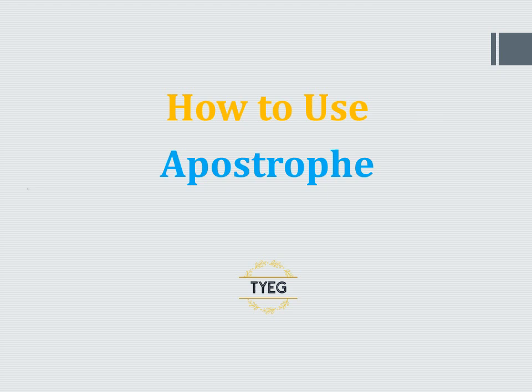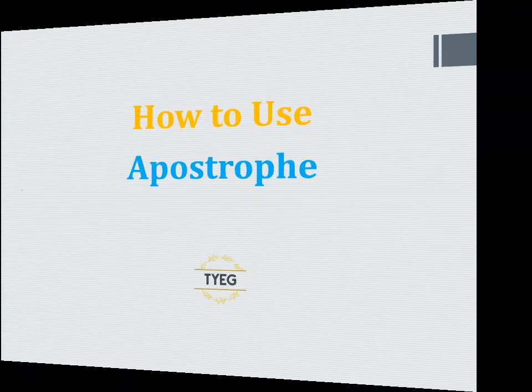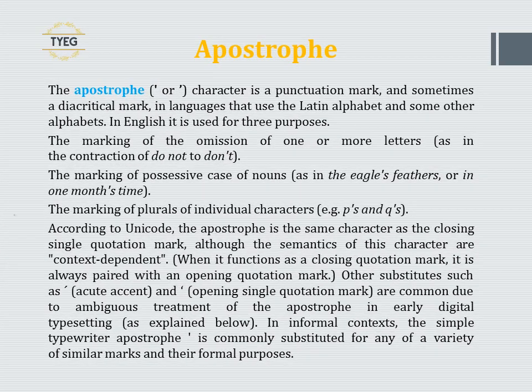How to use apostrophe. The apostrophe, or comma character, is a punctuation mark, and sometimes a diacritical mark, in languages that use the Latin alphabet and some other alphabets.